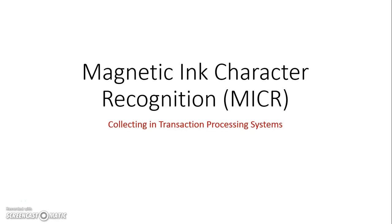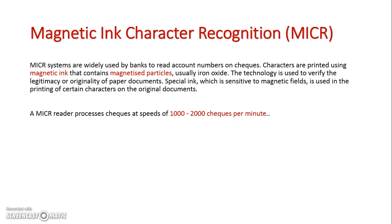Let's now take a look at Magnetic Ink Character Recognition, MICR, which is used for collecting in transaction processing systems. Essentially, what MICR is, is a special type of ink that can sometimes contain iron oxide, which is used to magnetize the ink particles.